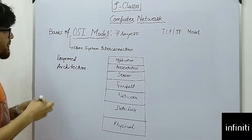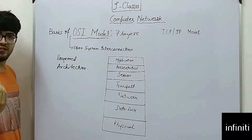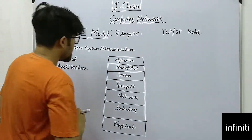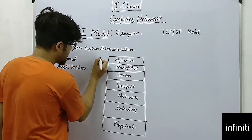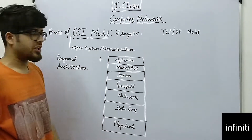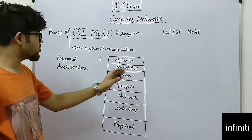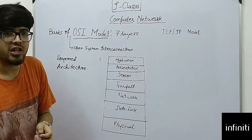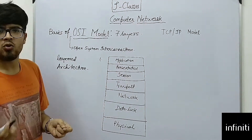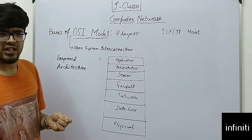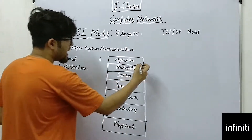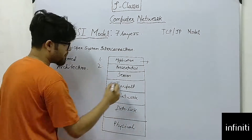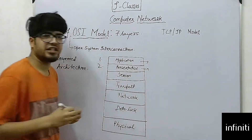Depending upon the sender or receiver, the layers get altered. The first layer is the application layer. The application layer corresponds to different browsers or applications related to networks, like Google Chrome, Safari, or Mozilla Firefox — these come under the application layer.